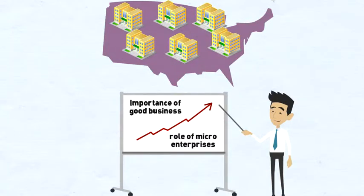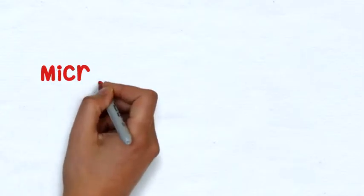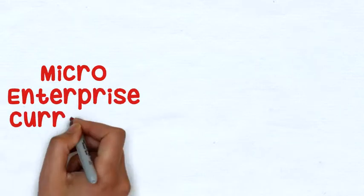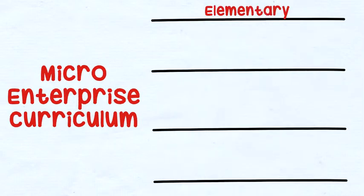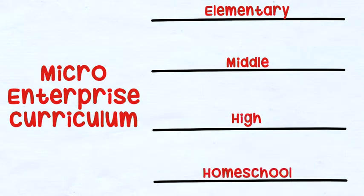The Micro-Enterprise Curriculum has four levels, broken down by age: elementary, middle, high, and homeschool.